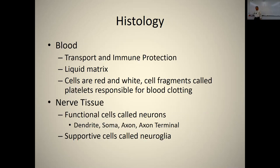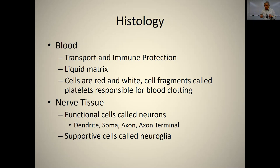Blood serves transport and immune functions and has a liquid matrix. Cells include red blood cells — which aren't technically cells — and white blood cells, plus cell fragments called platelets responsible for clotting. Lymph is filtered blood from capillaries and is essentially the same as blood plasma but with no cells and virtually no proteins.